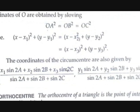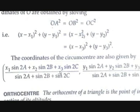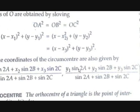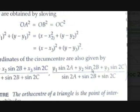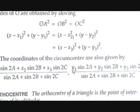The coordinates of the circumcenter (X, Y) are given by: X = (X1·sin2A + X2·sin2B + X3·sin2C) / (sin2A + sin2B + sin2C) and Y = (Y1·sin2A + Y2·sin2B + Y3·sin2C) / (sin2A + sin2B + sin2C), where A, B, and C are the angles of the triangle — angle A is angle BAC, angle B is angle ABC, and angle C is angle BCA.